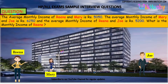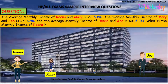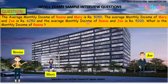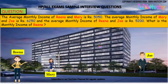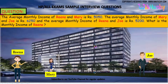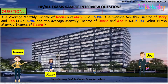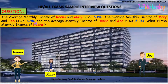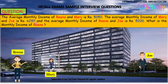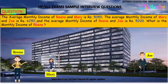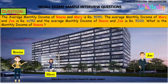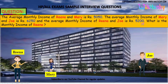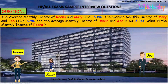The average monthly income of Reina and Mary is Rs. 5050. The average monthly income of Mary and Joe is Rs. 6250. And the average monthly income of Reina and Joe is Rs. 5200. What is the monthly income of Reina?